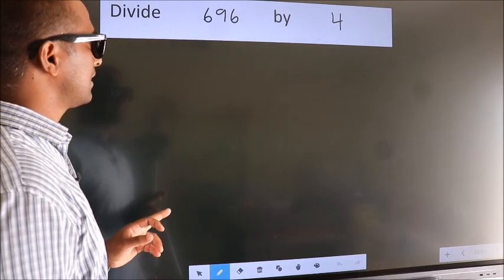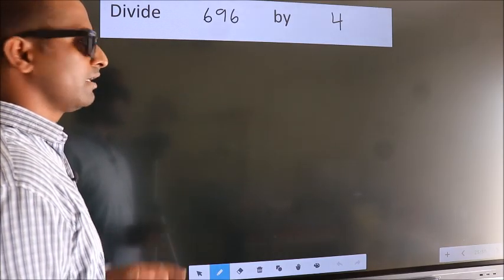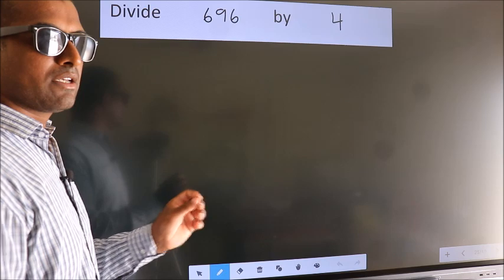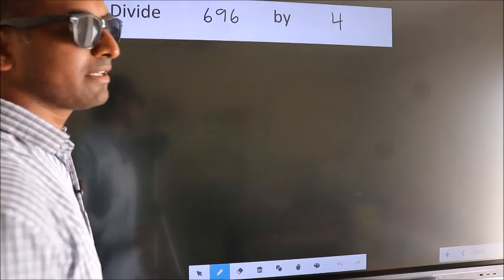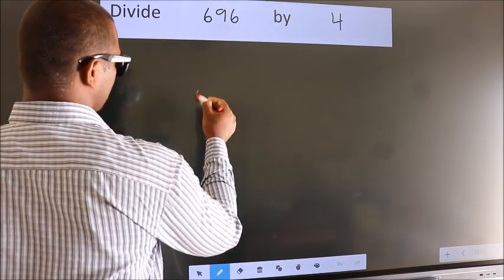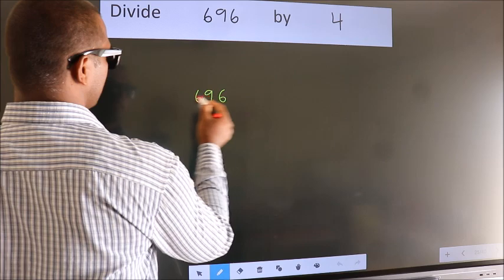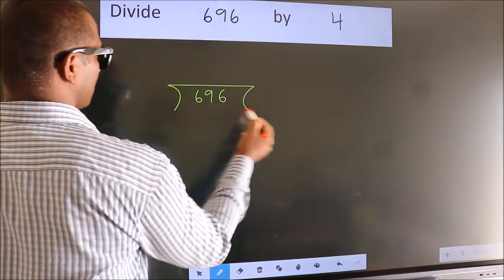Divide 696 by 4. To do this division, we should frame it in this way: 696 here, 4 here.